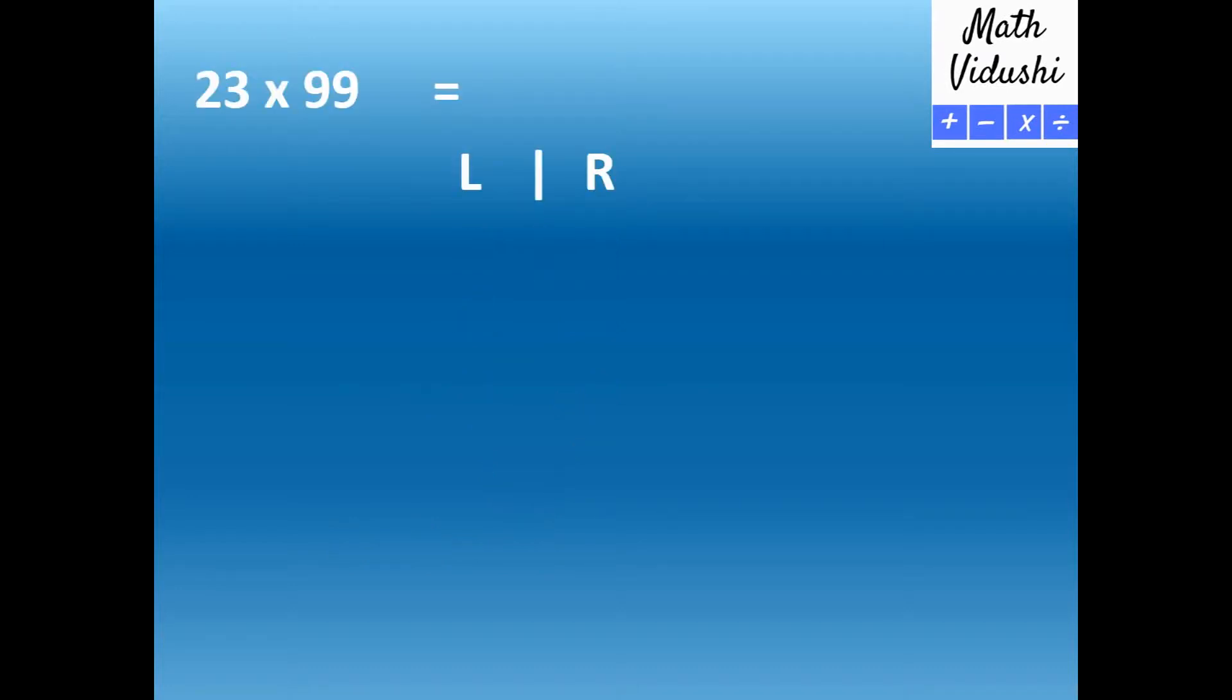23 multiplied by 99—you have two digits each in 23 and 99. All we do is 23 minus 1, which is 22, and 99 minus 22, which is 77, and you would get 23 multiplied by 99 is 2277.